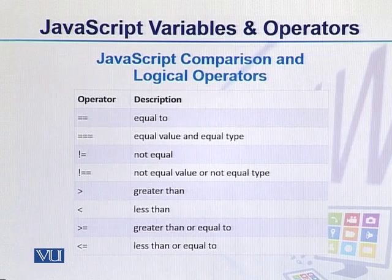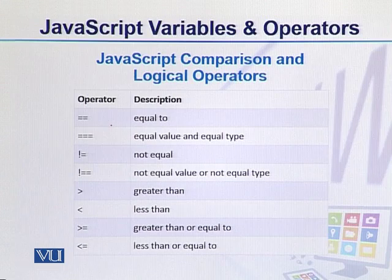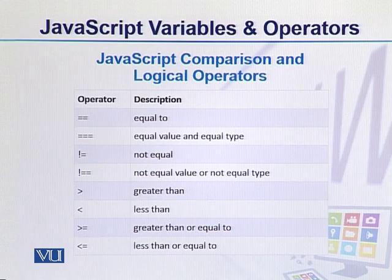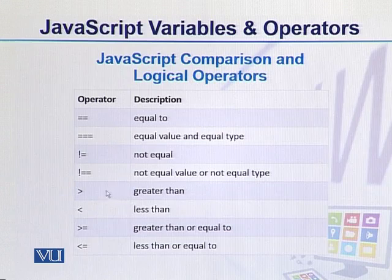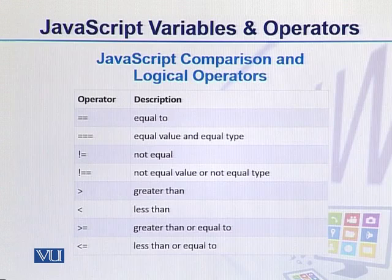We have many logical operators in JavaScript. Let's have a quick look. We have double equal for equality, triple equal for equal value and equal type, exclamation equal for not equal, and exclamation with double equal for not equal value and not equal type. We use greater or less than signs, and greater than or equal to, or less than or equal to signs as logical operators in JavaScript.